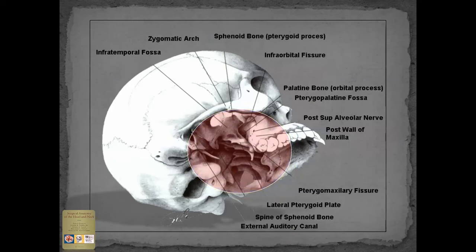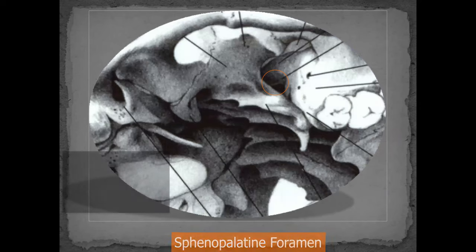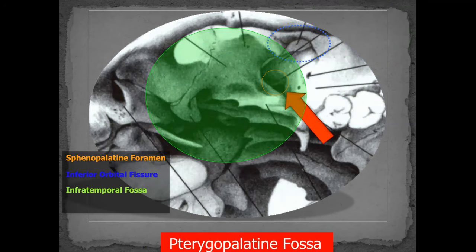This is a view from the side — the right side — after removing the TMJ. To access the fossa you have to go through the infratemporal fossa and through the pterygomaxillary fissure to reach it. The sphenopalatine foramen at the deep end connects it to the nasal cavity; the inferior orbital fissure connects it with the orbit. It's almost impossible to access from the side without major surgery.